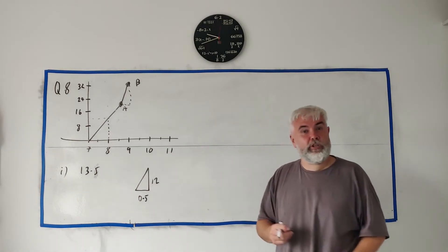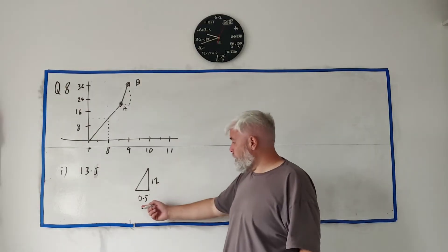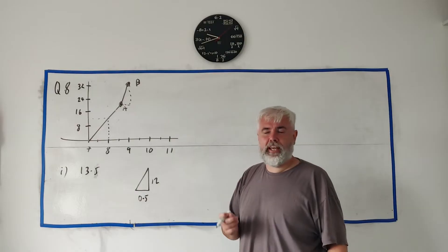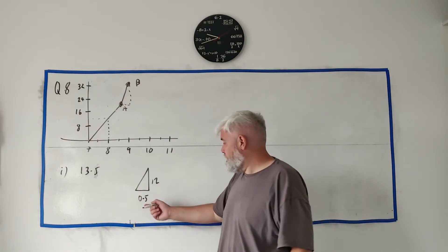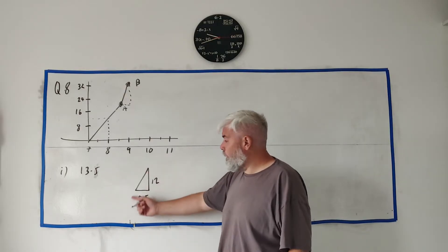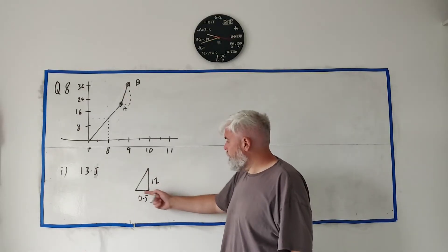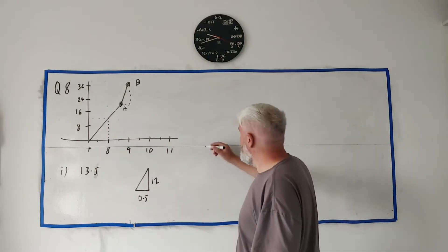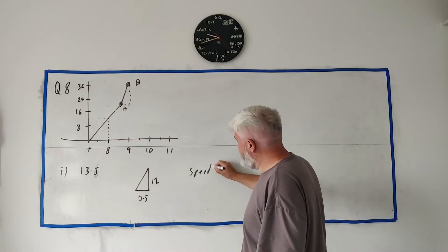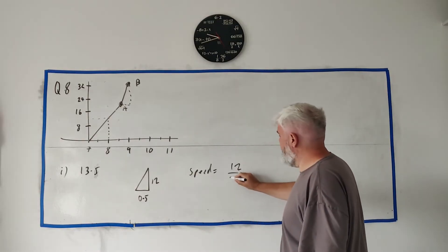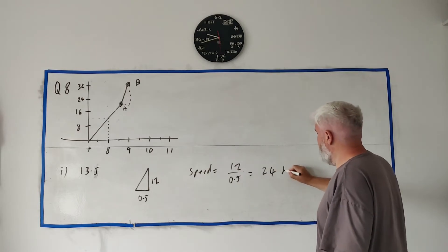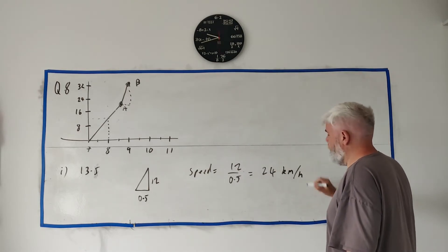So if you wrote 30 here, you'd get a different number, but you would have got the speed in kilometers per minute. That's why I wrote 0.5 hours. To find the slope, it's just the rise over the run, the height over the base. So the slope in this case, the speed in this case, is equal to 12 divided by 0.5, which on a calculator is 24 kilometers per hour.